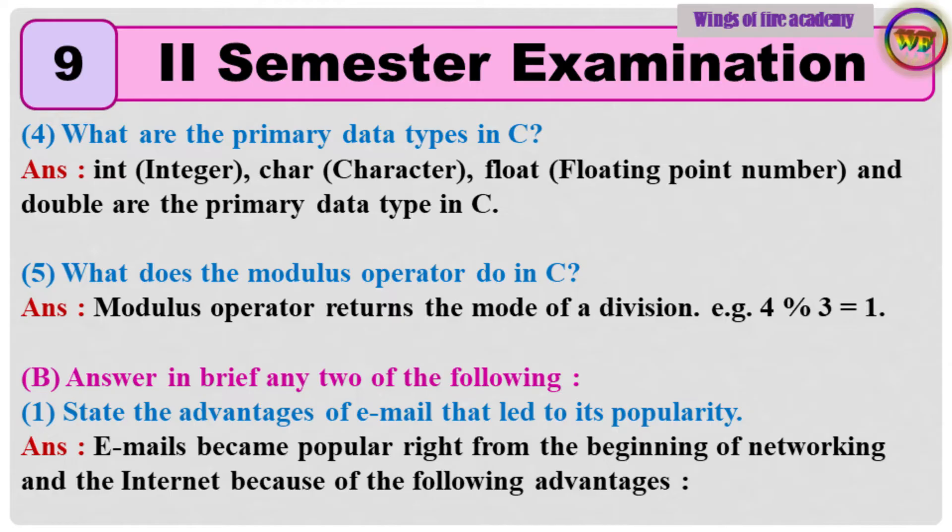5. What does the modulus operator do in C? Answer: The modulus operator returns the remainder of a division. For example, 4 % 3 is equal to 1.